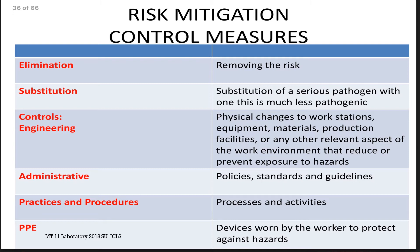Elimination is the most effective mitigation control but the hardest to implement — it involves removing the risk entirely. Substitution involves replacing a serious pathogen with one that is much less pathogenic. Engineering controls involve physical changes in workstations, equipment, materials, or production facilities that reduce or prevent exposure to hazards. Administrative controls pertain to policies, standards, and guidelines set by management. Practices and procedures include processes, activities, or laboratory procedures. PPE refers to devices worn by the worker to protect against hazards — the easiest to implement but the least effective among all mitigation control measures.